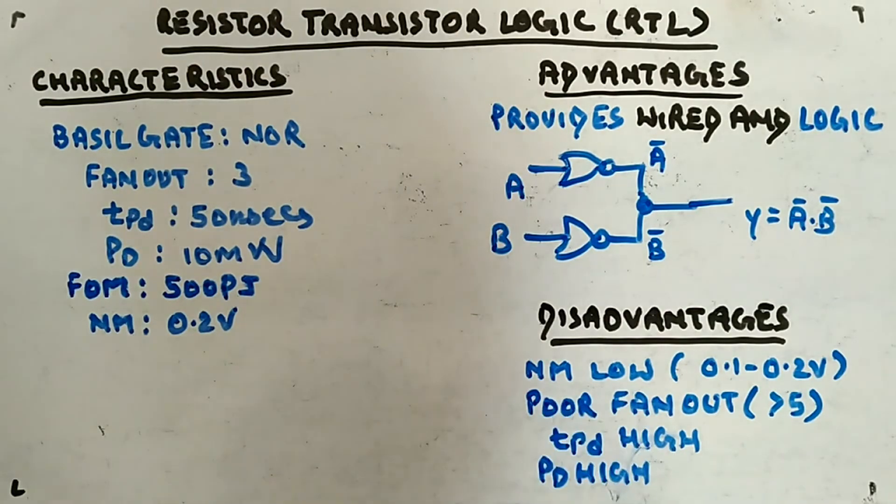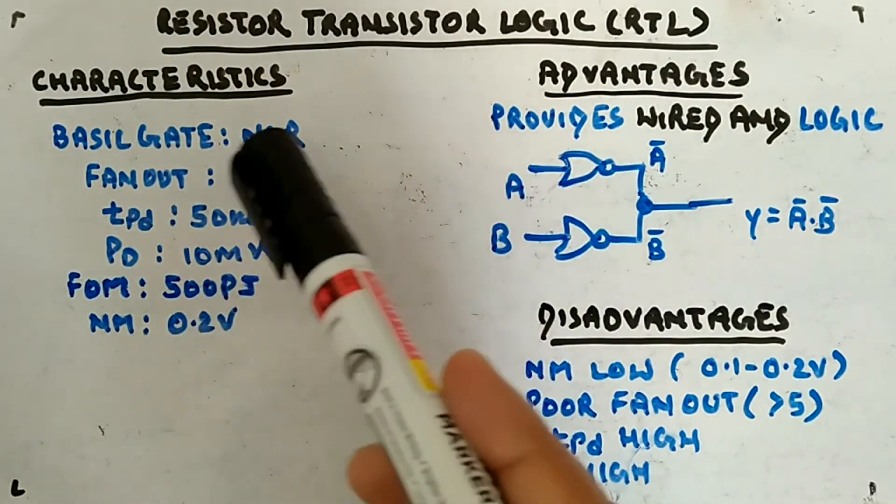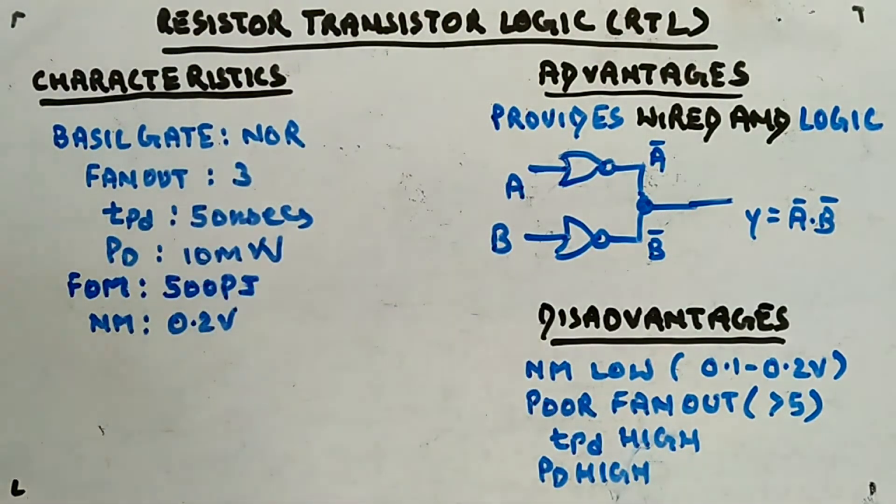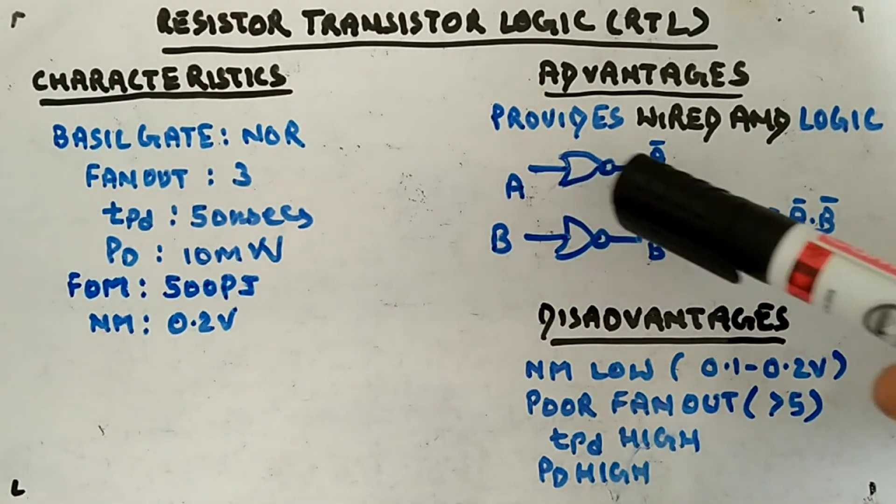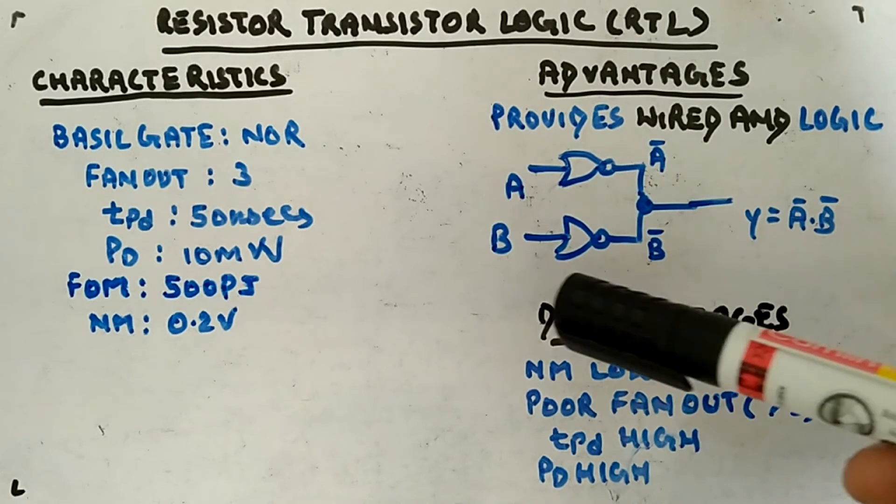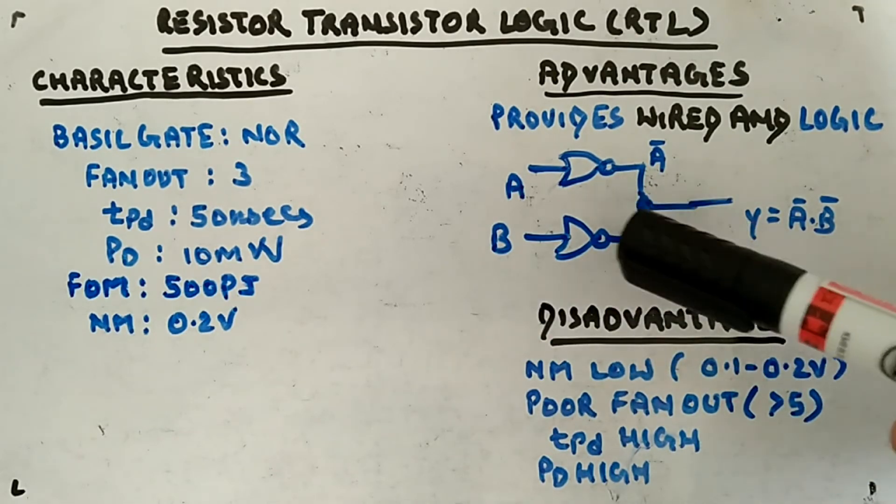Basically these are the characteristics of this resistor transistor logic. The advantages are it provides wired-AND logic. Wired-AND means you take the output of one NOR gate, output of another NOR gate, if you connect in this fashion it's called wired-AND.